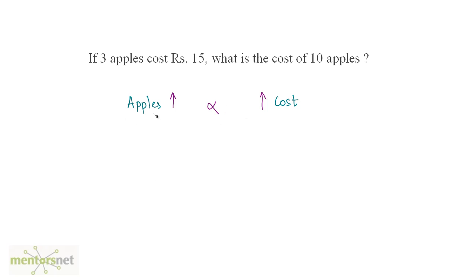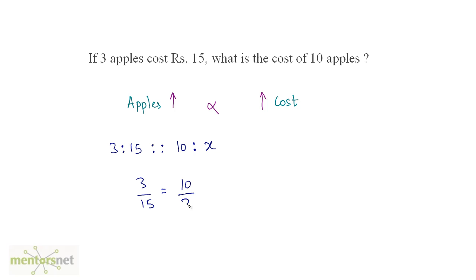The number of apples is in direct proportion to the cost. So I can take the ratio of apples to cost as directly proportional to another ratio of apples to cost. So 3 is to 15 — where 3 is the number of apples and 15 is the cost — is directly proportional to 10 is to X, where X is the cost of 10 apples. So 3 by 15 equals 10 by X, therefore X equals 10 times 15 by 3, which gives X equals 50. The cost of 10 apples is 50 rupees.